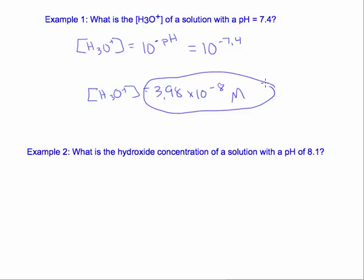So again, the hardest part about this is figuring out how to put it in your calculator, and keeping straight pH and pOH and hydronium and hydroxide. Let's look at this next one. It's asking you to solve for hydroxide, but it gives you pH.